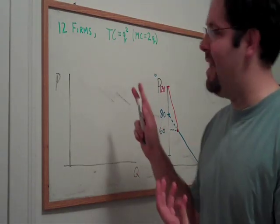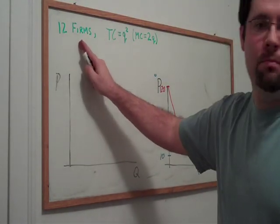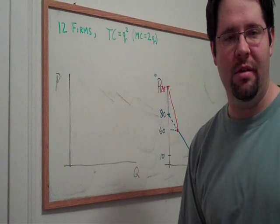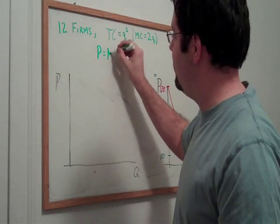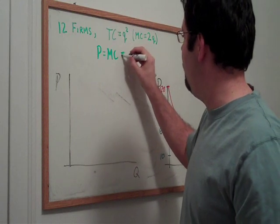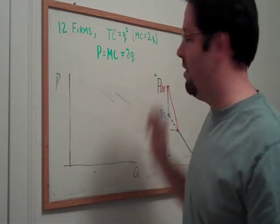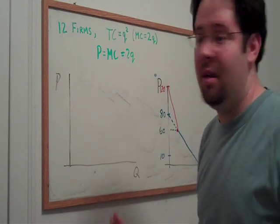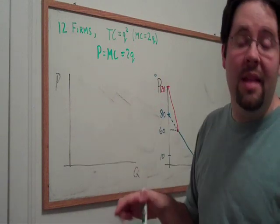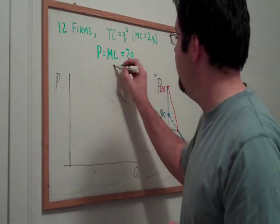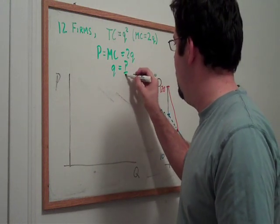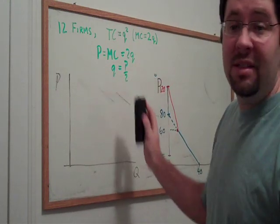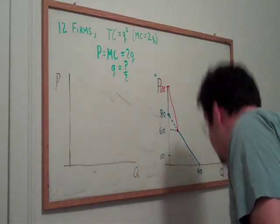In this example, we have twelve firms. Each has a total cost of q squared. Set price equal to marginal cost. Well, if we know the marginal cost as a function of quantity, all we do is invert that, and that gives us our supply curve. The supply curve is going to be p over two. Each firm has a supply curve of p over two.